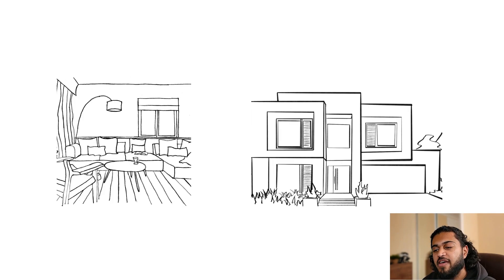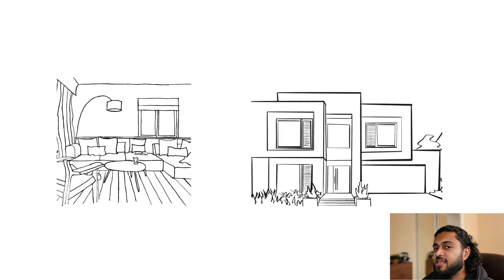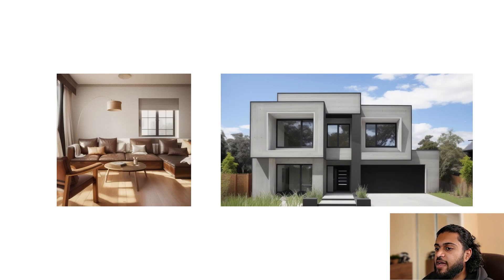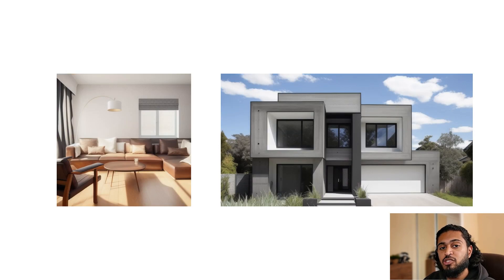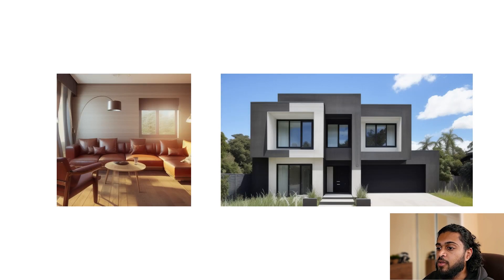Hey guys, it's Def here. In this video I want to show you how we can turn our rough sketches into realistic renders using AI. The results are pretty incredible — all the images follow our inputs amazingly well. The scenes are able to change completely in terms of lighting and materials, but it keeps the object and geometry consistent, which is something people have wanted from AI tools for a while.